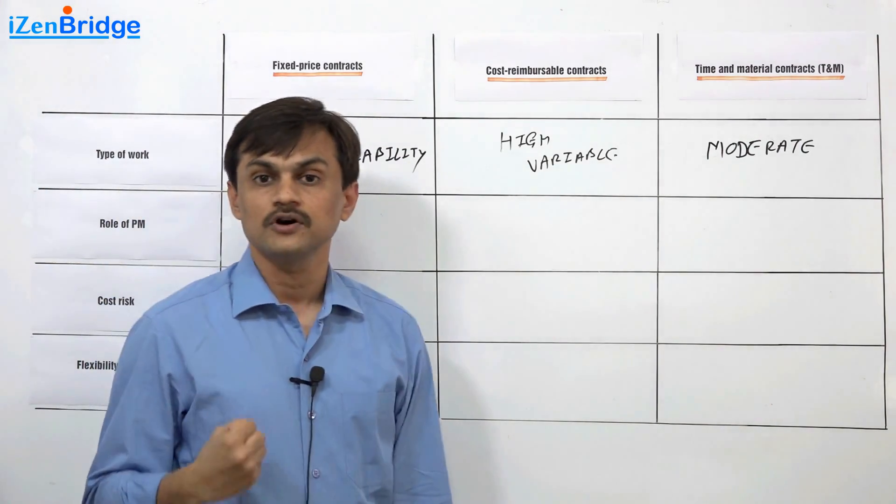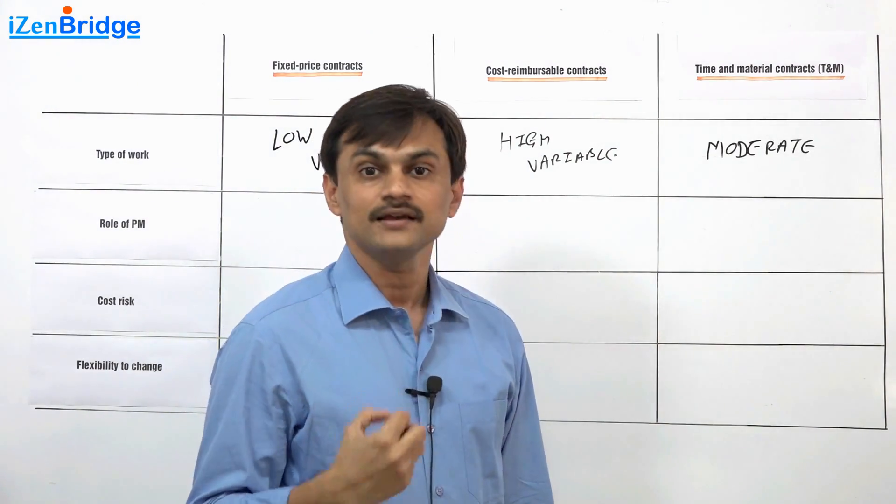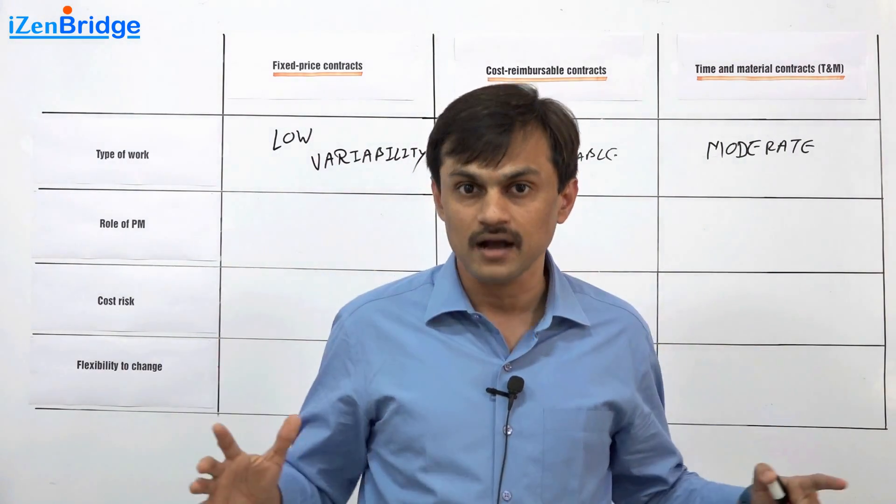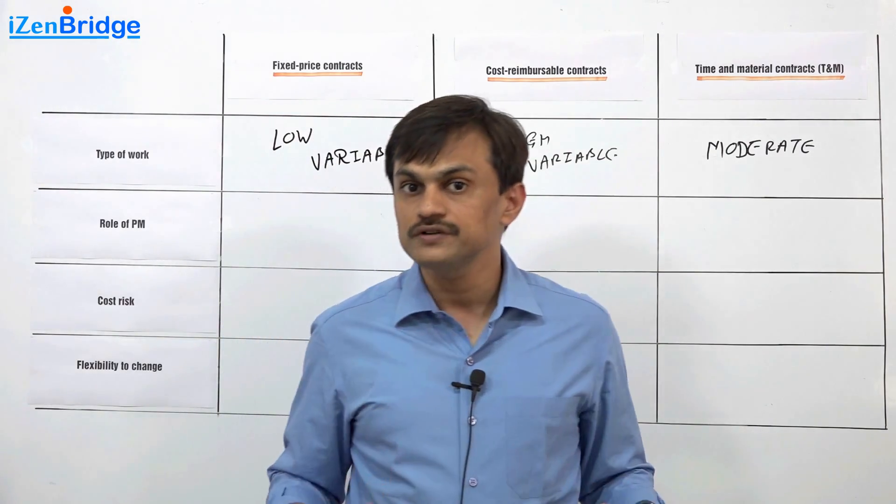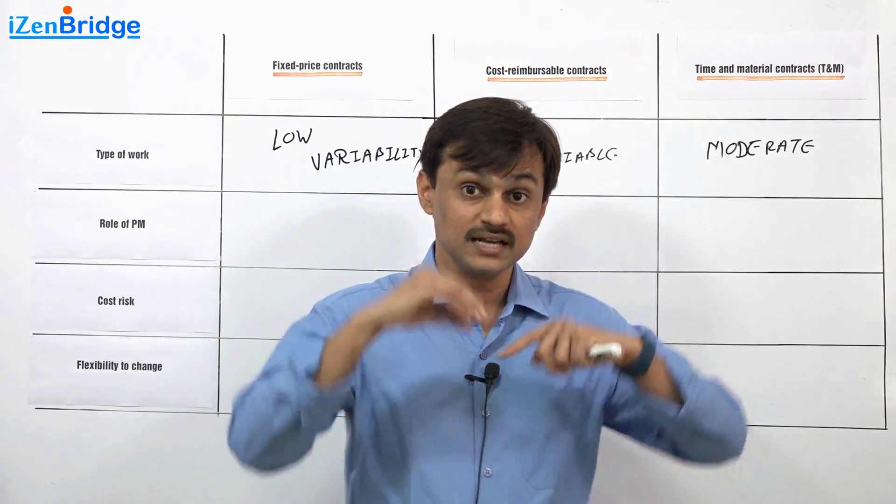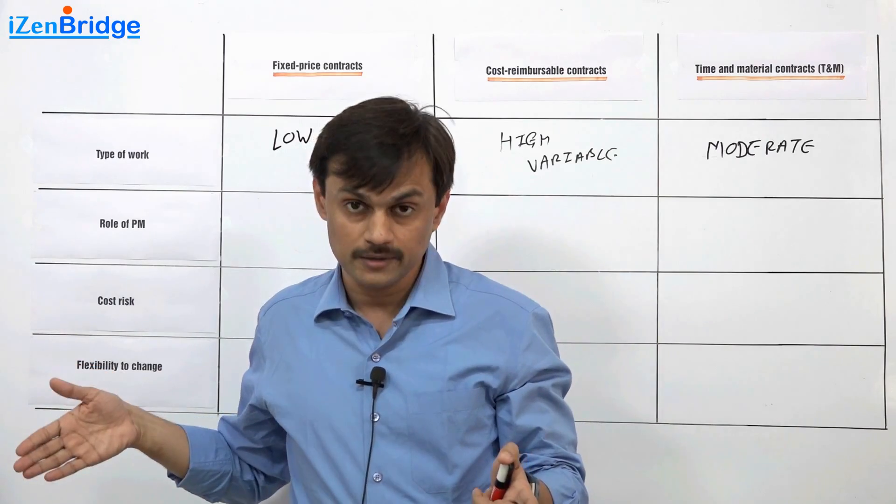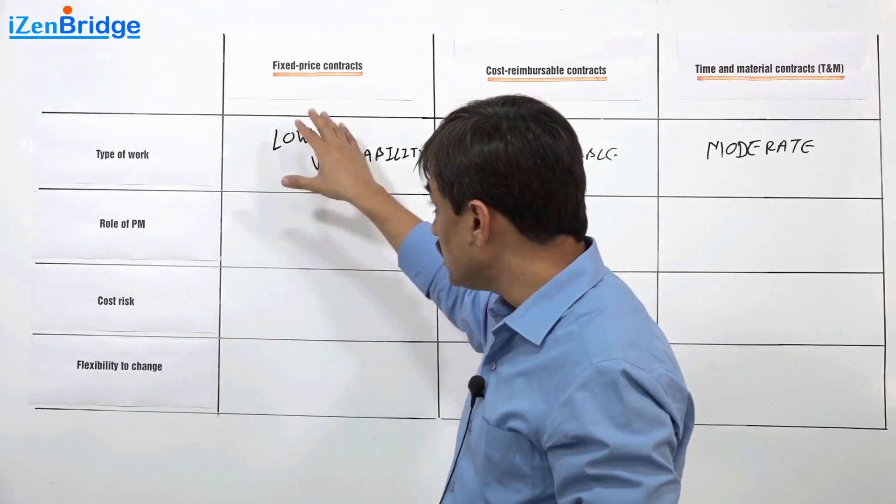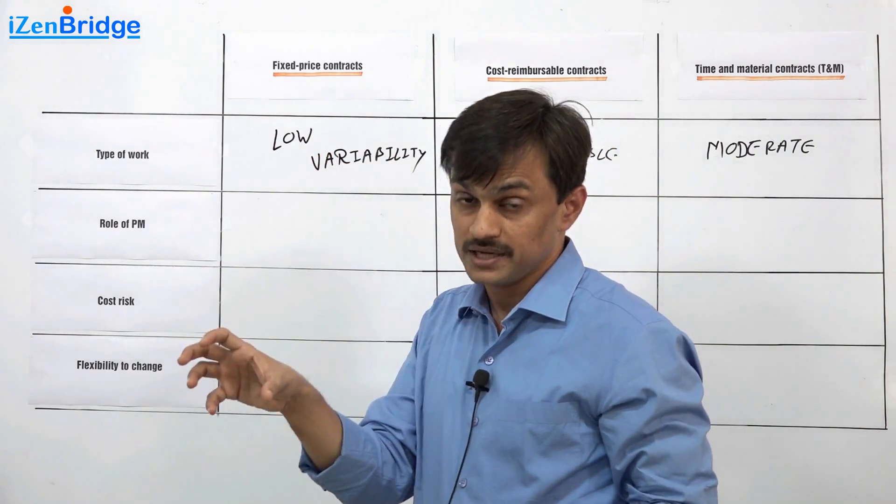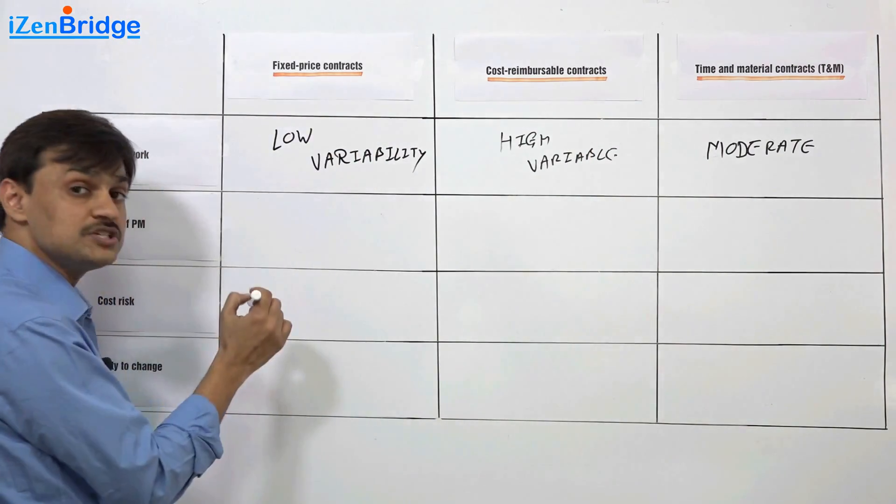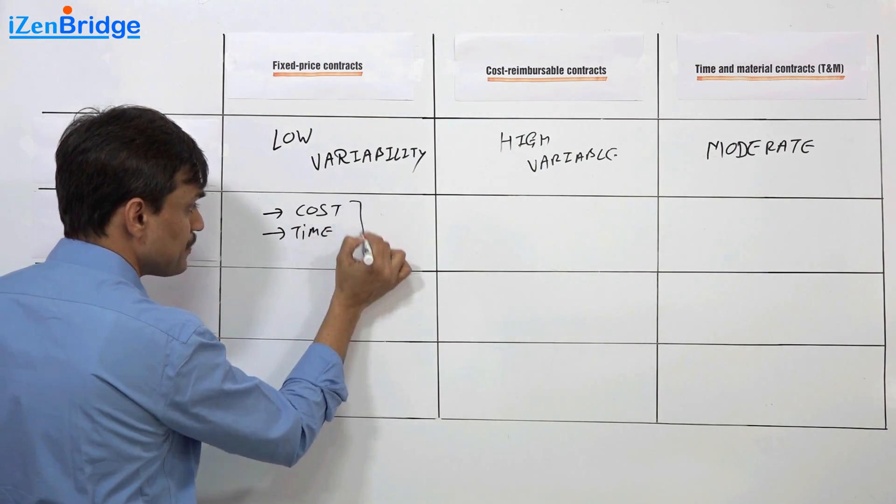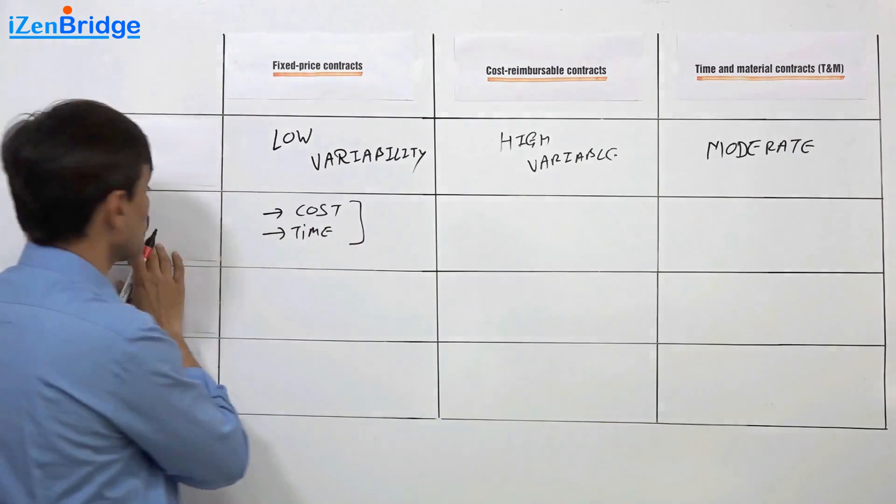When you are a project manager of a fixed price contract, you are managing a very accountable position. Your responsibility to manage everything in a cost is very, very high. You are the one who makes majority of decisions because your customer does not care what kind of things you are buying. Your customer stakeholder will not care about it. Your sponsor will care about it. The power in a fixed price contract: the project manager has full accountability of managing the project in a given price.